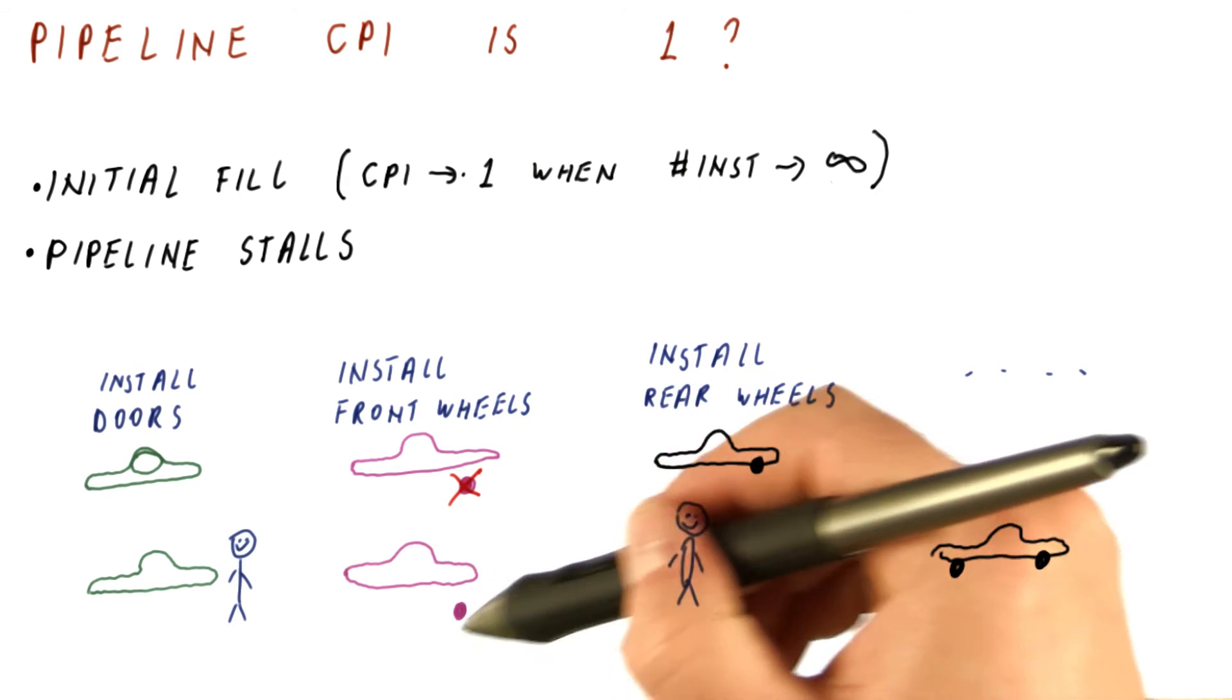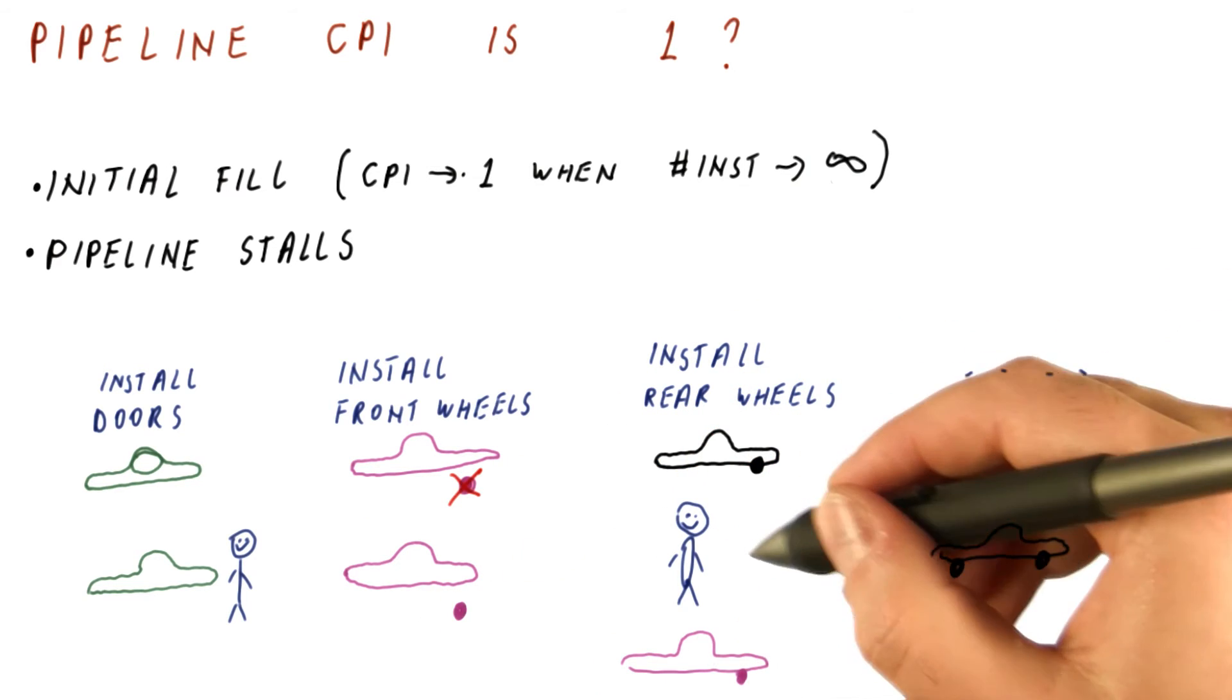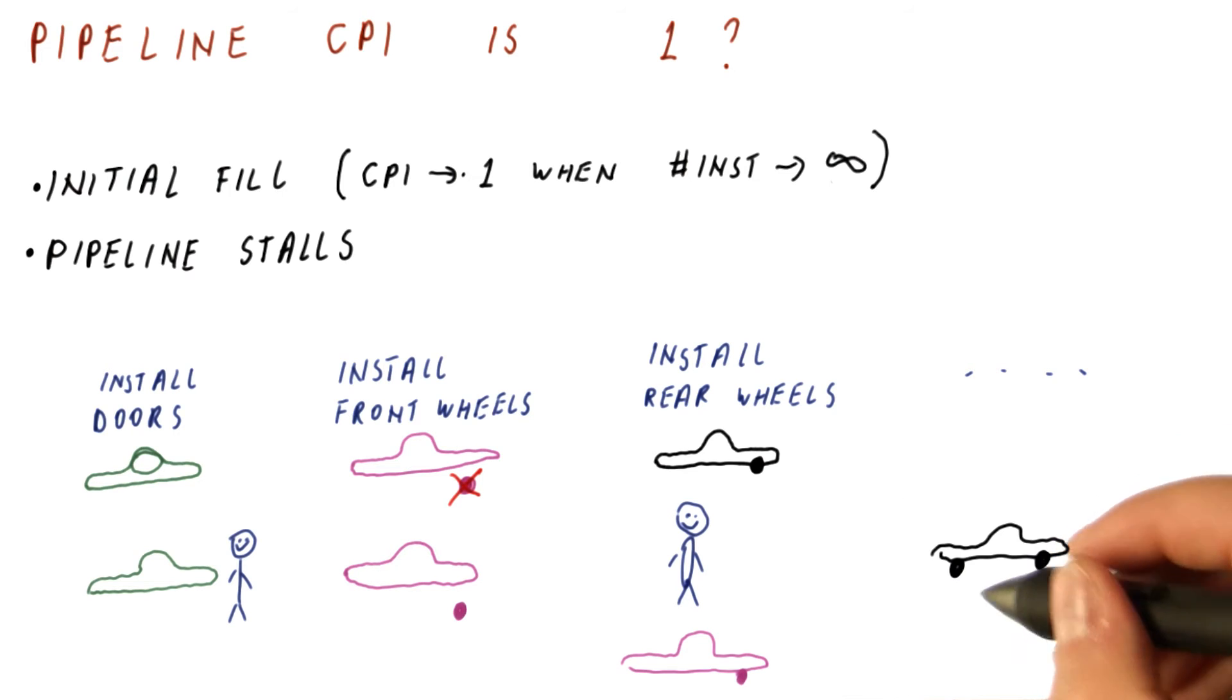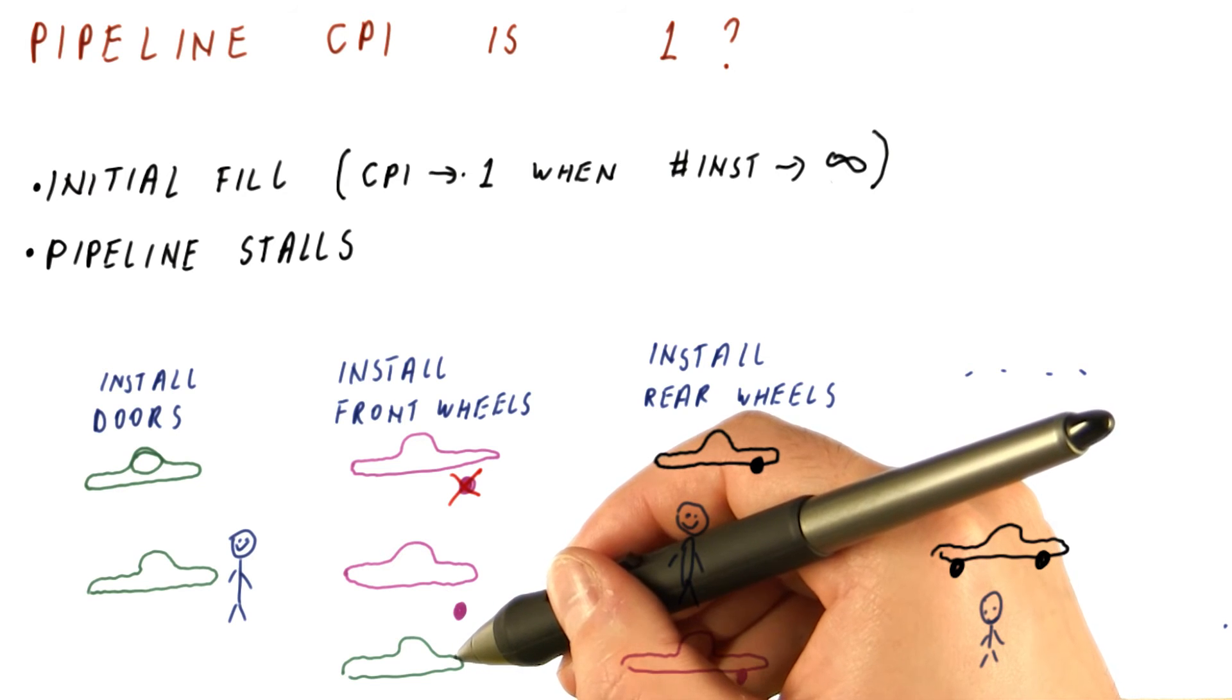Let's say that the wheels are correctly installed this time here. Now the purple car moves on. The next stage of the pipeline, however, gets to do nothing, because no car has moved on. The green car will now move here, and we will begin a new car here for installing the doors.